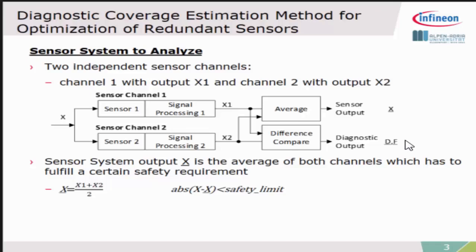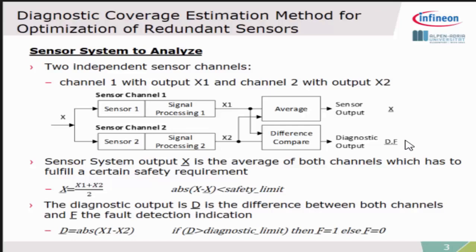We also have a safety requirement from the system which means the deviation from our sensor output compared to the real value should be smaller than a certain safety limit. This was checked by this diagnostic function where we are calculating the difference. If the difference is exceeding a certain diagnostic limit, then we should raise a kind of failure flag so we can diagnose this point.